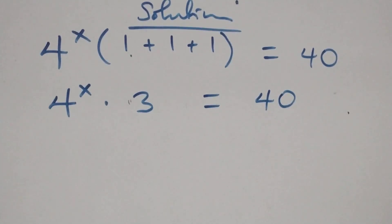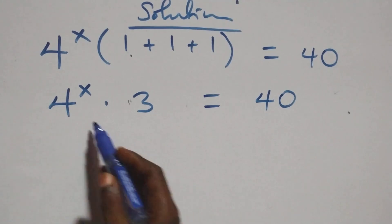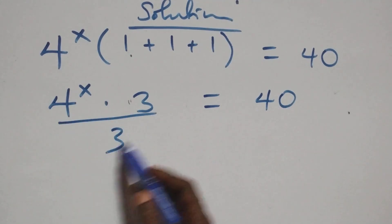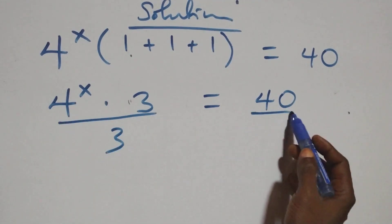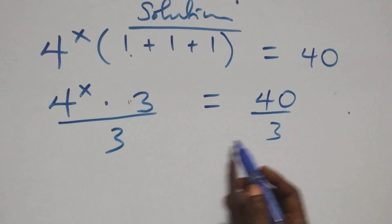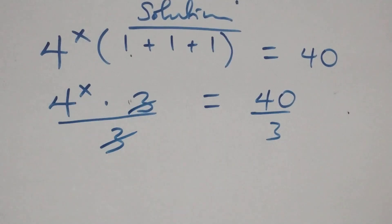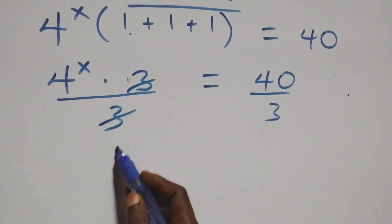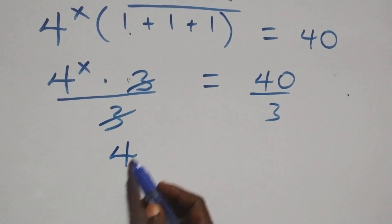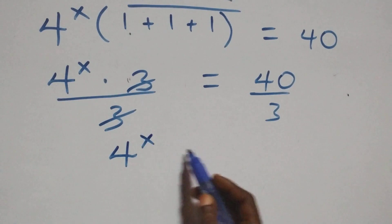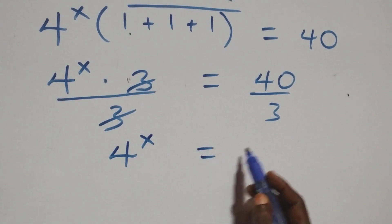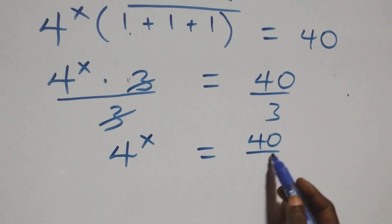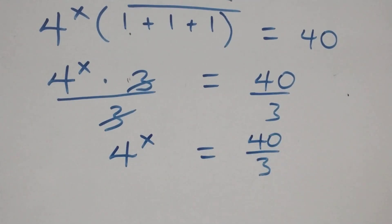The next step here, we divide both sides by 3. The 3s cancel each other, and we have 4 raised to power x equals 40 over 3.